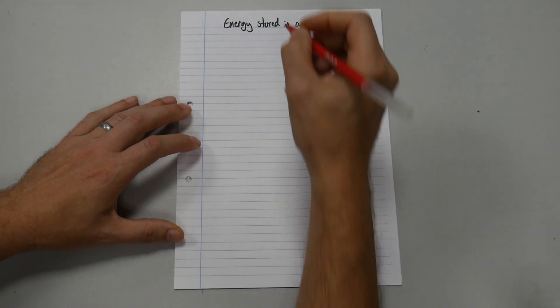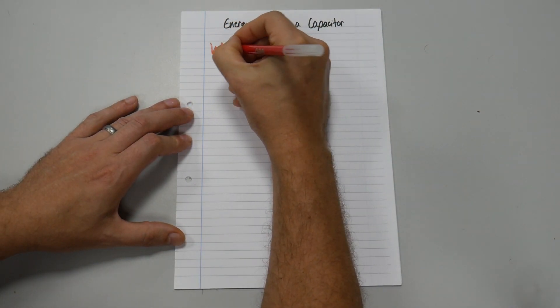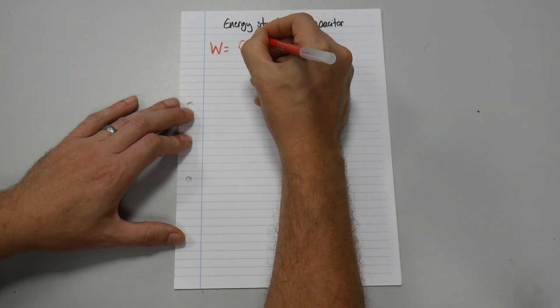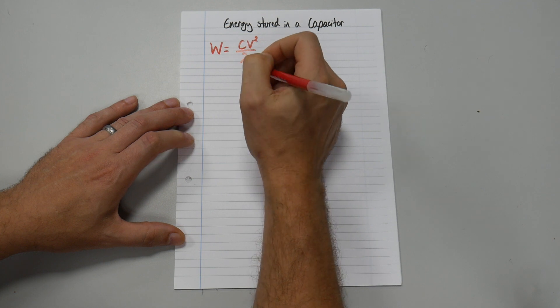Let's change our color pen. Let's write down our formula. So it is W equals CV squared over 2.